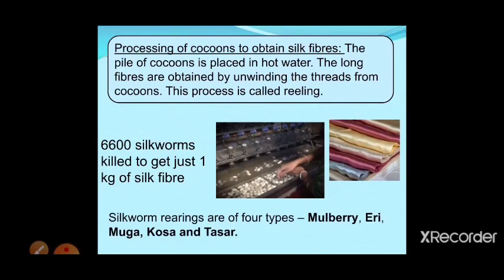There are four to five types of silk moth rearing. The type of silk obtained depends on the place, weather, and type of moth. The five types are: Mulberry silk moth, Eri silk, Moga silk, Kosa silk, and Tasar silk. Tasar and Moga silk are mostly found in the northeast. Mulberry silk is produced in large amounts in Karnataka, Andhra Pradesh, Kerala, and Tamil Nadu, and is named after the mulberry plant leaves the silkworms eat.